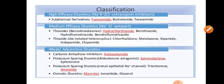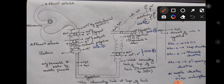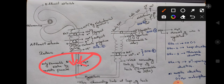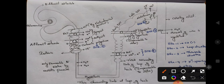Osmotic diuretics act on the down part of the PCT region, where they decrease water permeability and reabsorption.